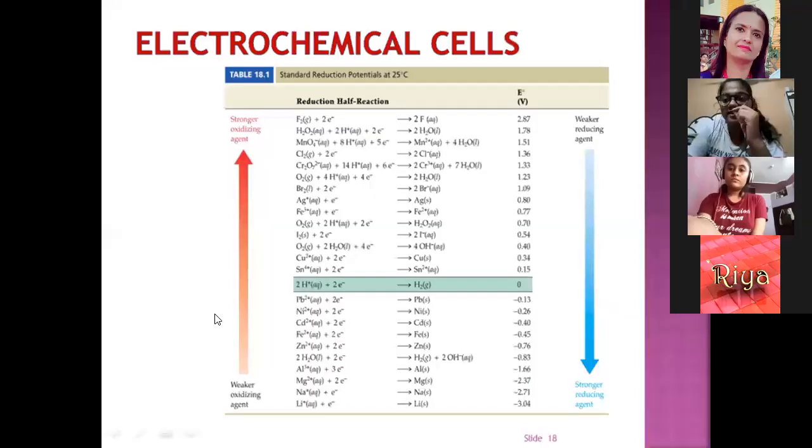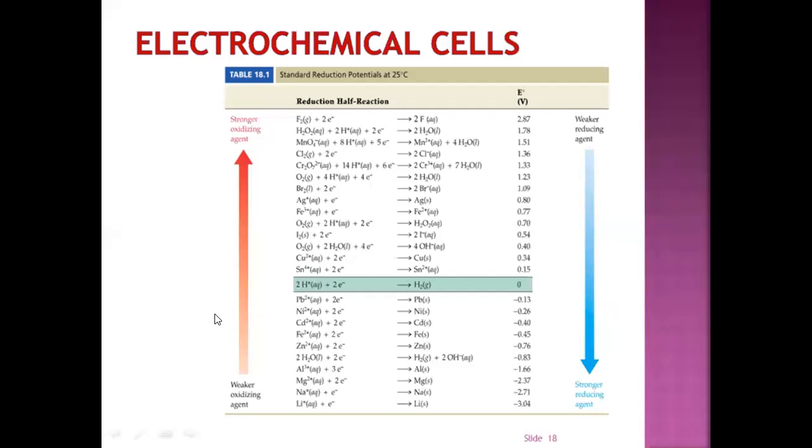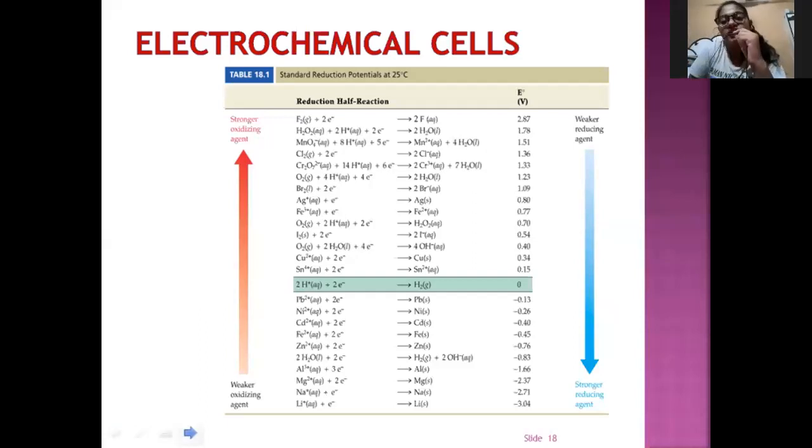This is the electrochemical series. In electrochemical series we can see that the fluorine is at the highest point. It has the highest oxidation potential and lithium is at the lowest and it has the highest reduction potential. As we go from up to down, the reducing agent ability decreases and as we go from down to up, the oxidizing agent decreases.